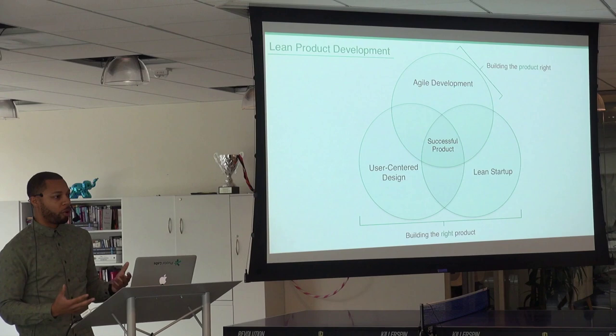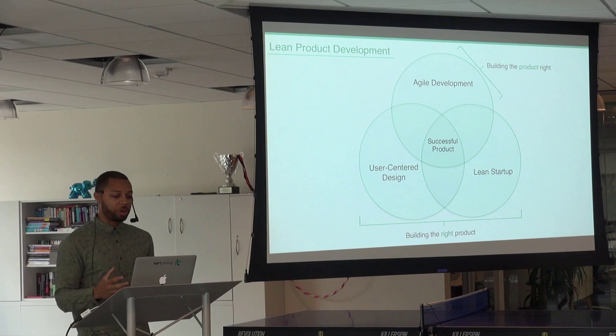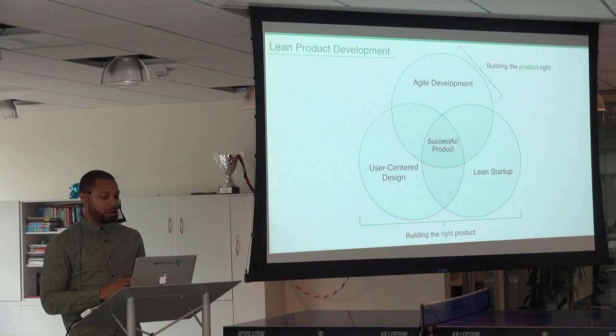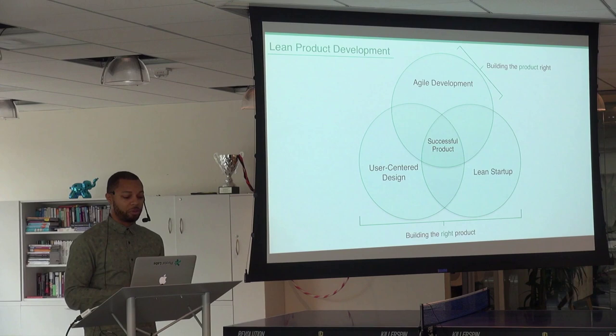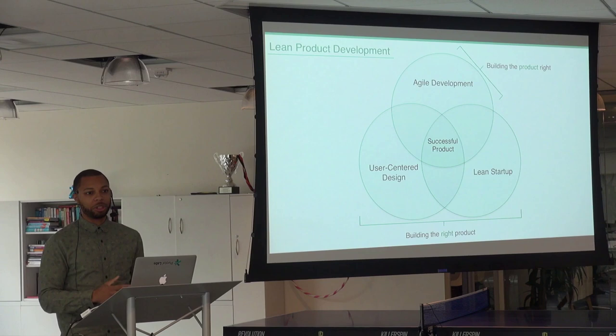As a final point, it really takes all three disciplines to deliver a successful product. A lot of companies may have adopted agile principles but didn't adopt user-centered design or lean startup, so they run the risk of building the product efficiently but still not validated with customers — and still risk delivering a product the market doesn't want. Or vice versa: if you only have user-centered design, you may have some customer feedback loop but aren't able to translate that into business value because you don't have the other two components.